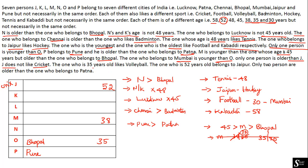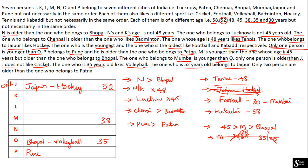The next clue: the one who is 35 years old likes volleyball. Since O is 35 years, O likes volleyball. The next clue: the one who is 52 years old belongs to Jaipur. J is 52 years, so Jaipur is placed for J. We already know that the Jaipur person likes hockey, so hockey is placed for J.